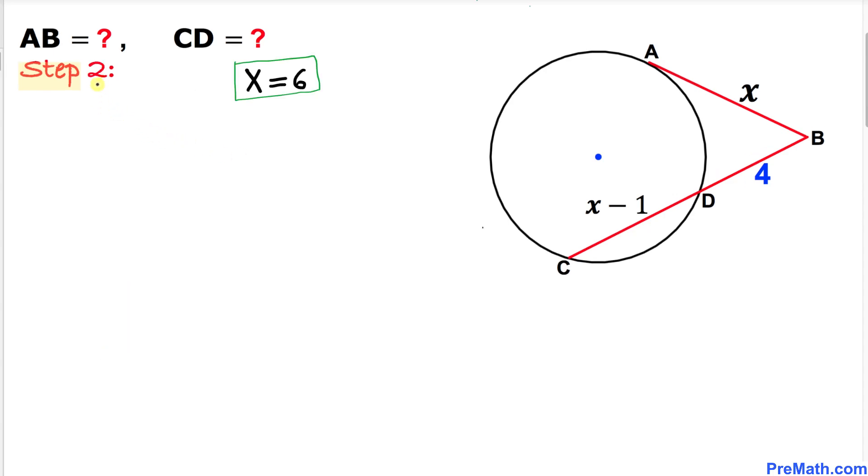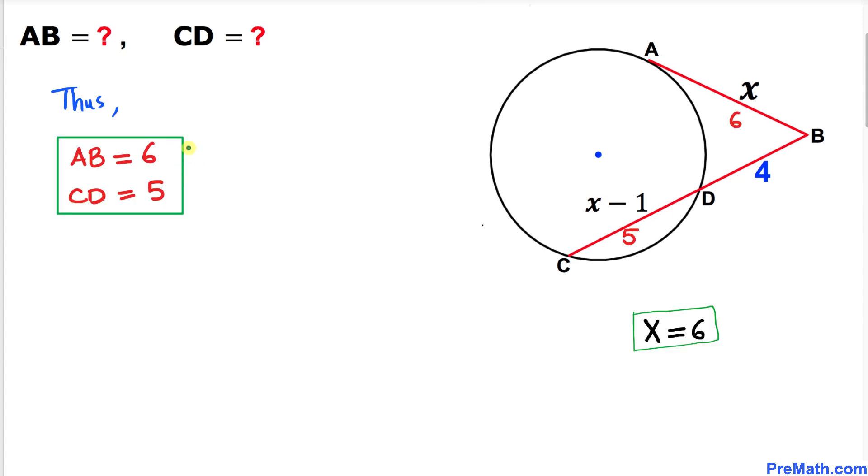And here's our final step. Let's calculate the value of AB. We know AB equals x, and our x value is 6, so therefore AB value turns out to be 6. Likewise, our CD is x minus 1, and our x value is 6, so that's going to be 6 minus 1. CD value turns out to be 5. Thus, our AB value is 6 units and our CD value is 5 units.